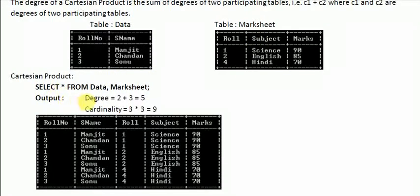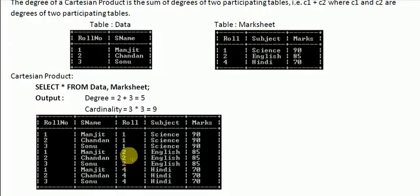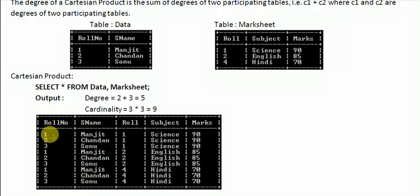The output shows rows 1, 2, 3 from the first table each combining with the first row of the second table, then again with the second row, and then with the third row. So all rows from the first table are joined with all rows from the second table, forming the Cartesian product.